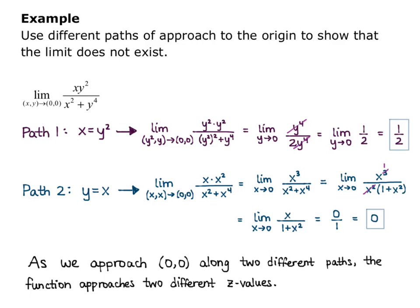So our conclusion, and this is important that you make the conclusion after you've found your two paths approaching two different z values. Our conclusion is that the limit as (x,y) approaches (0,0) of xy² over x² + y⁴ does not exist, or DNE.